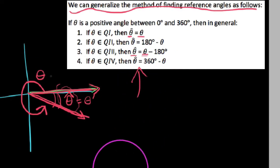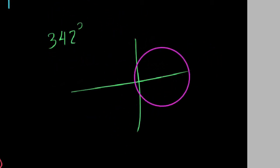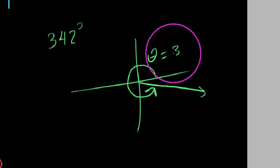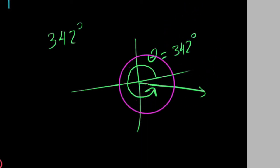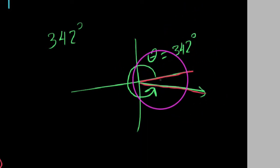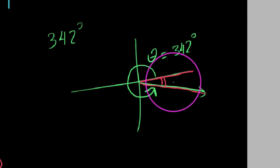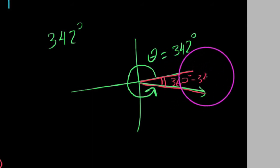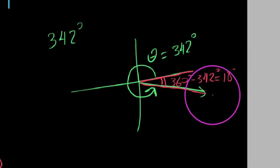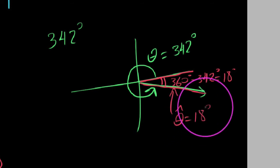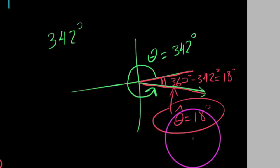I'd always suggest just sketching the angle. For example, a 342-degree angle: I know it's short of 360, so it sits right here in the fourth quadrant. Theta is 342 degrees, and the reference angle is the angle between this terminal ray and the x-axis. Thinking about it: 360 minus 342 equals exactly 18 degrees. So theta-prime for a 342-degree angle is 18 degrees. Remember, reference angles are always positive and always acute.